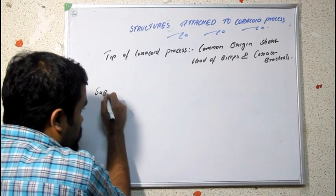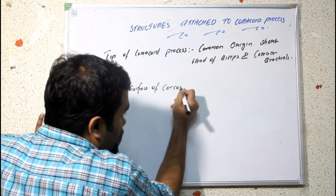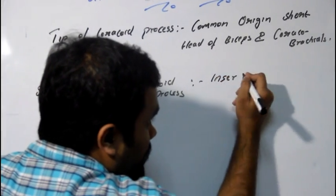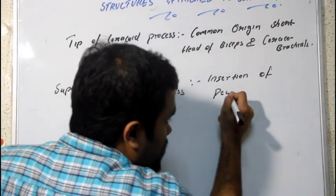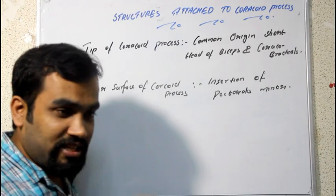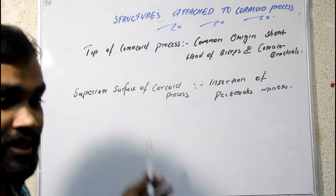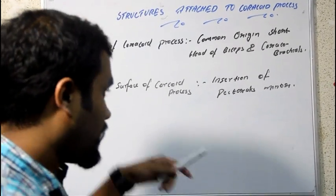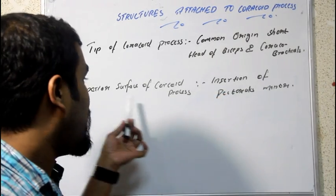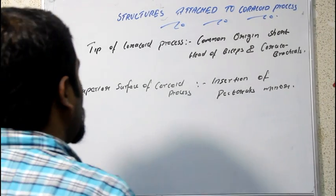At the superior surface of the coracoid process, a main muscle is inserted — not pectoralis major, but pectoralis minor. We already studied where pectoralis major is inserted, that is in the lateral lip of the bicipital groove. Now the insertion of pectoralis minor is in the superior surface of the coracoid process.